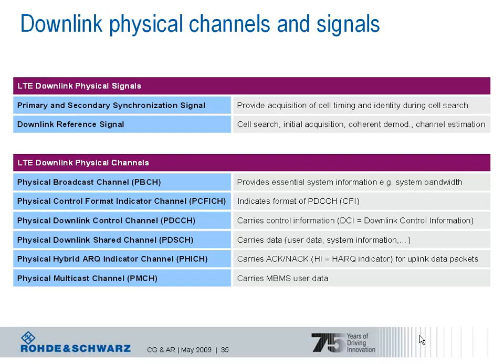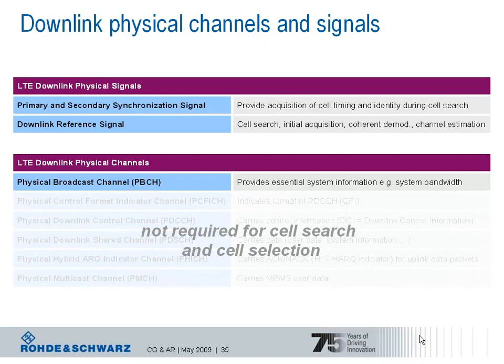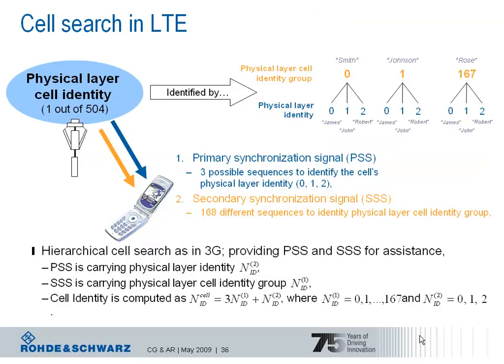Back to the first step after powering up the UE: for the cell search and cell selection, just the downlink physical signals and the physical broadcast channel are important. A successful execution of the cell search and selection procedure, as well as acquiring initial system information, is essential for the UE before taking further steps in communicating with the network. As in wideband CDMA, LTE uses a hierarchical cell search procedure.